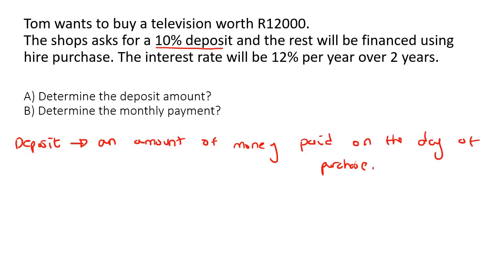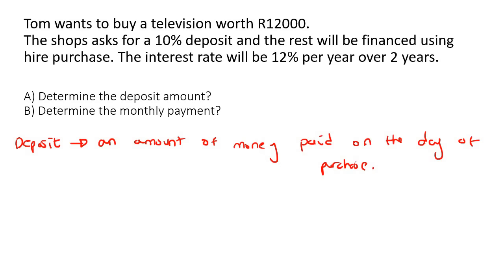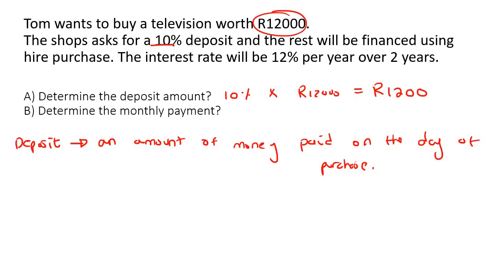So it's a small amount of money that the person who owns the shop is going to ask you to pay immediately. The rest of the money will be financed using hire purchase. The shop asks for a 10% deposit. The deposit is very easy — it's 10% of the original amount of the television which is 12,000 rand. If you do this correctly you should get 1,200 rand. So when you walk into the shop you are going to pay the person 1,200 rand.